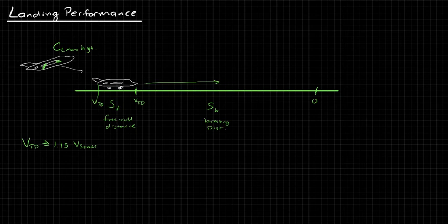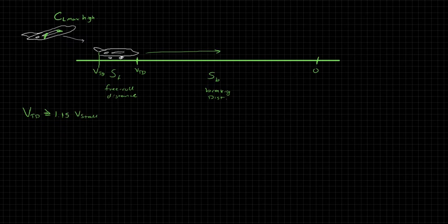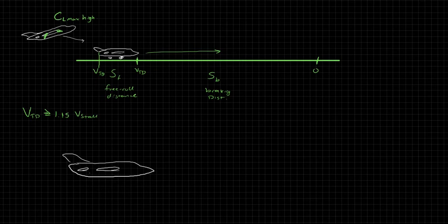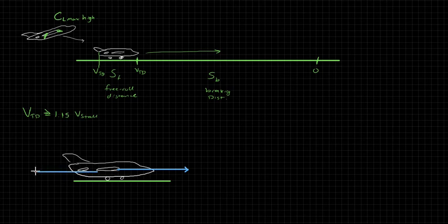So if we look at the forces on the aircraft once it hits the ground, it's going to look really familiar. So we draw our aircraft on the ground. Our forces are going to be as you'd expect. We're going to have thrust, we're going to have drag, we're going to have lift acting straight up and we're going to have weight acting straight down. And then we're also going to have friction, as we've talked about before.